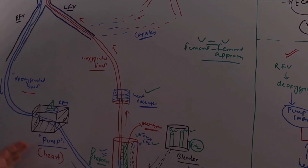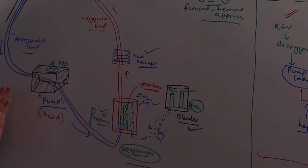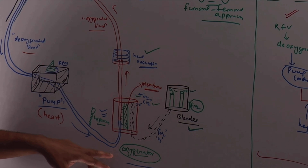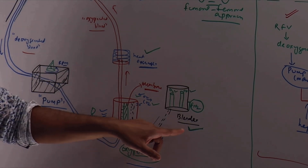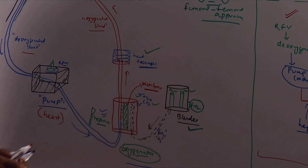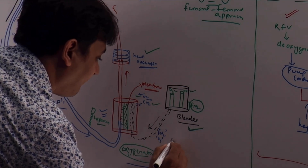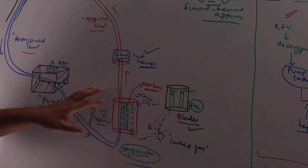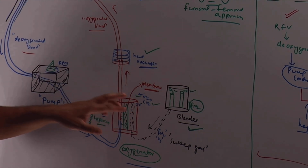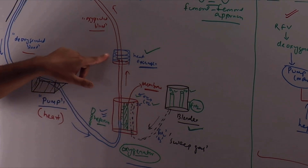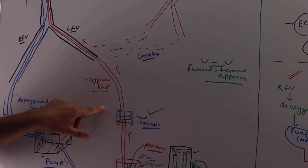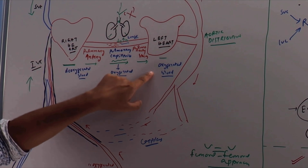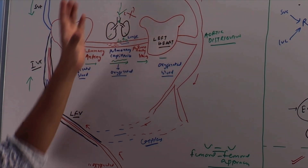Blood is taken from a femoral vein, drawn through a pump creating negative pressure using a motor. That blood is heparinized and put into the oxygenator where gas exchange happens; the blender provides the FiO₂ via the sweep gas. Once oxygenation and carbon dioxide removal are complete, the blood passes through a heat exchanger and the heated, oxygenated blood is put into the right heart, from where it goes to the left heart and is then distributed throughout the body.